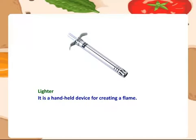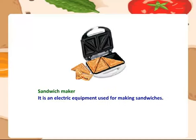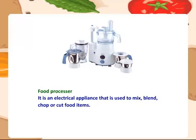Lighter — it is a hand held device for creating a flame. Sandwich maker — it is an electric equipment used for making sandwiches. Food processor — it is an electrical appliance that is used to mix, blend, chop or cut food items.